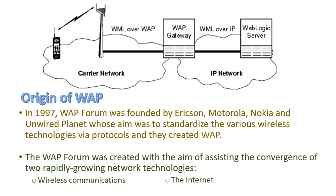In the diagram, you can see that a mobile phone is connected with the tower via a wireless link, and this tower is connected with the WAP gateway. This whole network is the carrier network where we use WML over WAP. WML is Wireless Markup Language, used with WAP. On the other side, the WAP gateway is connected with WebLogic Server, and this network is called the IP network, where we use WML over IP. The carrier network is the wireless link and the IP network is the wired link. WebLogic Server provides the internet service to the mobile subscriber.